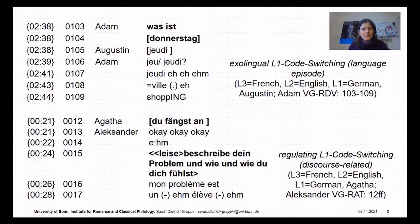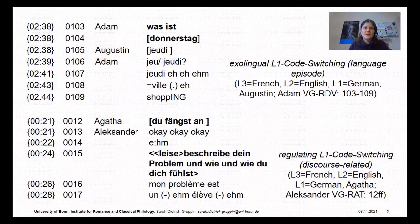But then there are lots of other pragmatic functions in my data. In the second sample you can observe two discourse-related switches to the L1 German. We have regulating code switching when learners leave behind the completion of the task in order to discuss how they proceed. Agathe is concerned with turn-taking issues when she states 'you should start', and Alexander reassures himself of what has to be done by translating and reading aloud the assignment in L1 German.